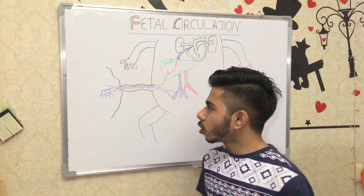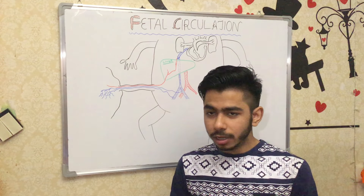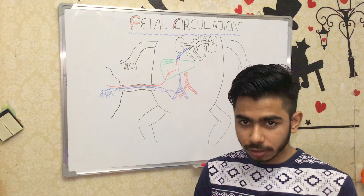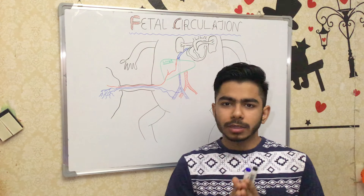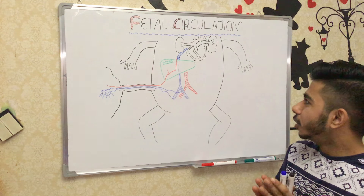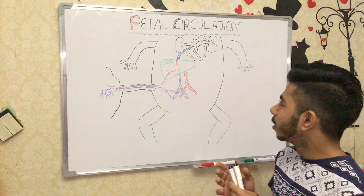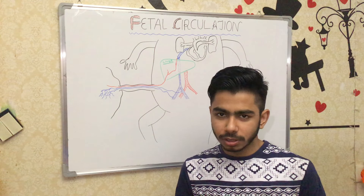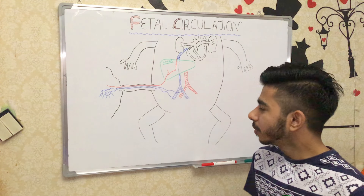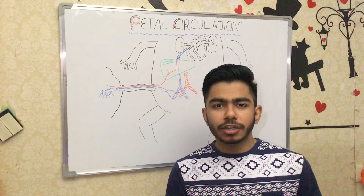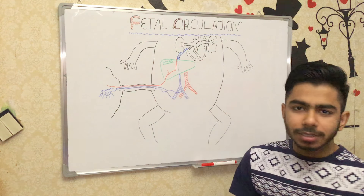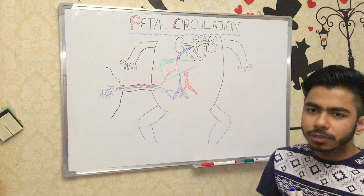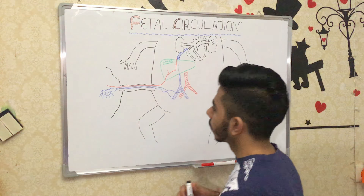Now let's talk about fetal circulation. It is very important to understand because fetal circulation is not the same as adult circulation — the lungs are not open in the fetus because the fetus is not breathing oxygen, as it is in the womb of the mother. It takes its nutrients from the placenta through the umbilical cord.